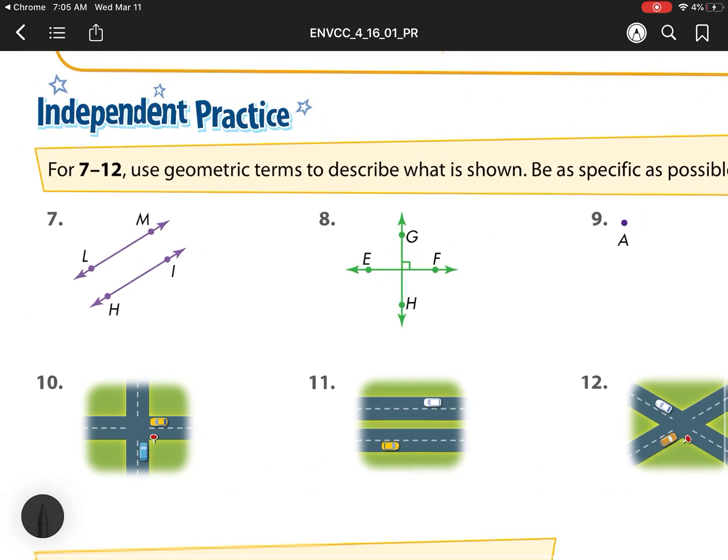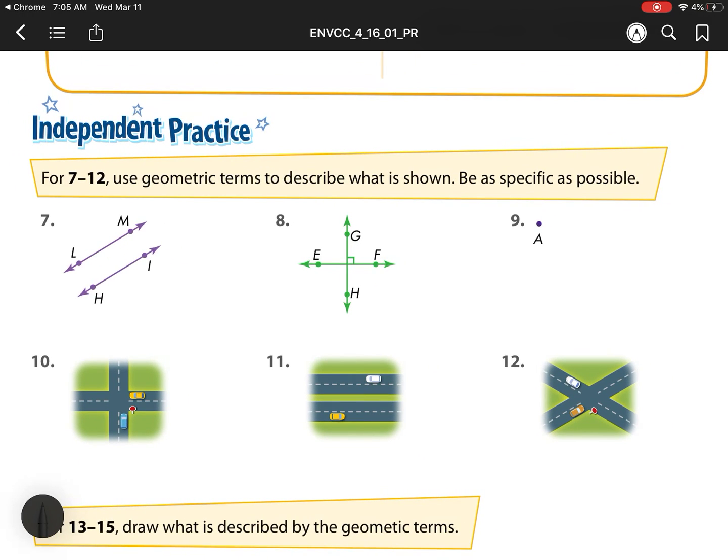Use geometric terms to describe what is shown. Be as specific as possible. So remember, our geometric terms are parallel, which are two lines that never touch, and perpendicular, which are two lines that intersect at right angles.